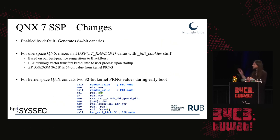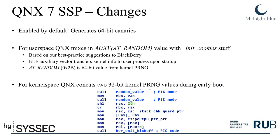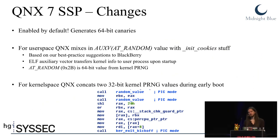We reported these issues to BlackBerry, and they have now enabled stack canaries by default and generate 64-bit canaries on the 64-bit OS. For user space canaries, they mix in an AT_RANDOM auxiliary vector value, based on our best practice suggestions, by taking a 64-bit random number generator value from the kernel PRNG and transporting it to the user space process to mix in with the init_cookies function. In kernel space, QNX now concatenates two 32-bit kernel PRNG values during very early boot to create a canary. So canaries are fully fixed now — good news for defenders.